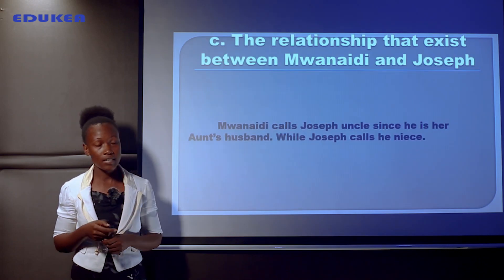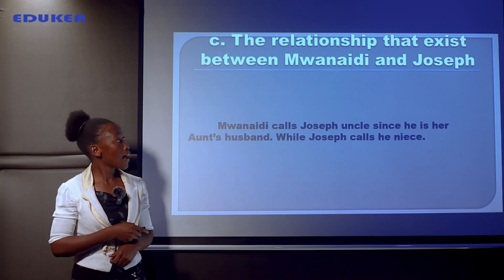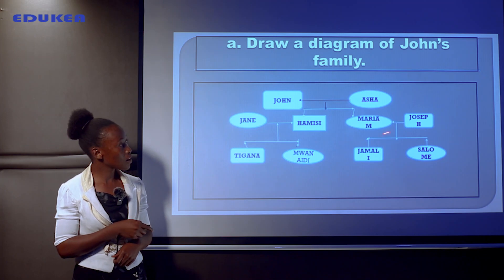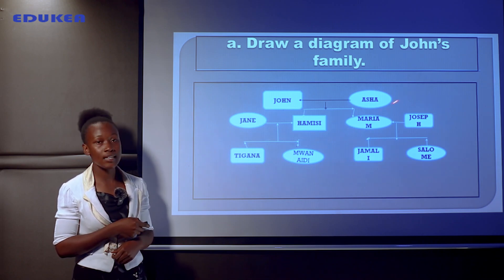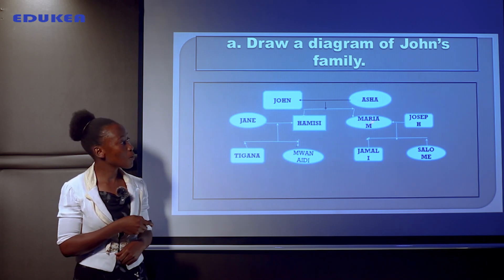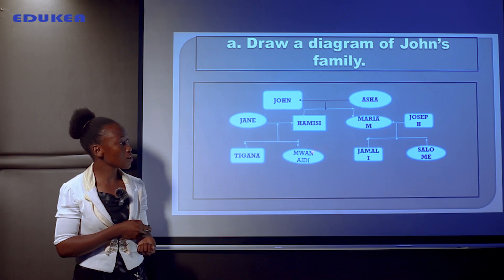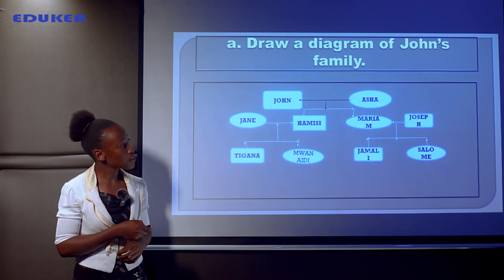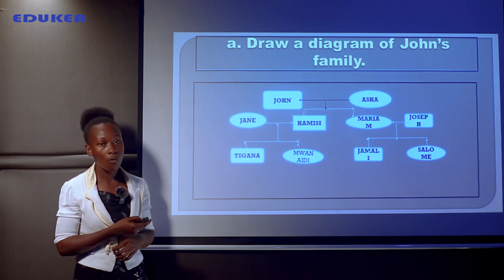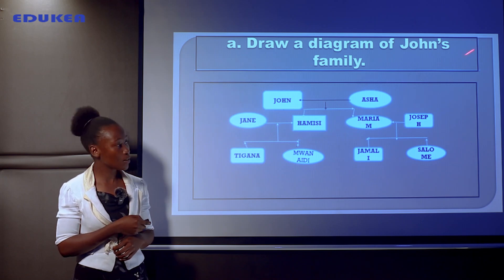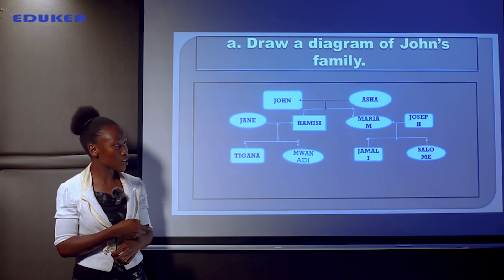Question C asks about the relationship that exists between Mwanaidi and Joseph. Just as Tigana calls Joseph uncle, Mwanaidi also calls Joseph uncle because he married their auntie — Mwanaidi's auntie, Mariam. Mwanaidi is the daughter of Hamisi and Jane, who is Joseph's wife's brother's family. So Mwanaidi calls Joseph uncle, while Joseph calls Mwanaidi niece.